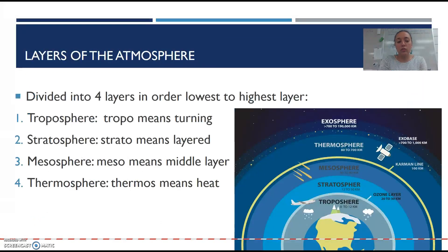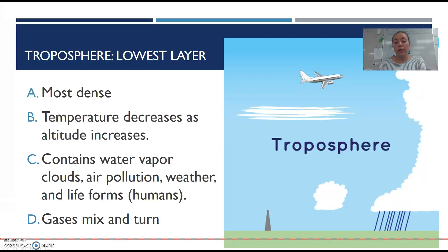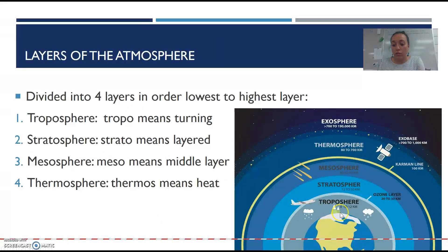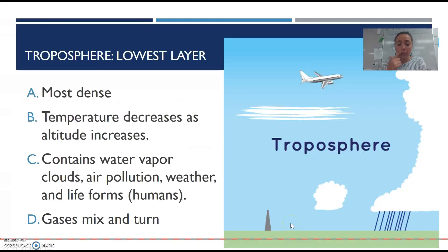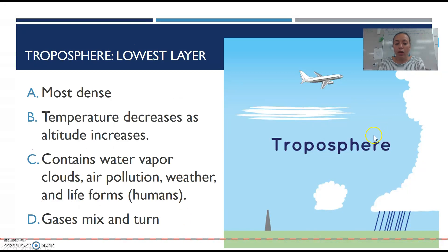Let's start with the first one: the troposphere. That's where we are — we're in the troposphere. You can see it goes basically all the way up to the clouds. It's the most dense because the troposphere has the lowest altitude. The temperature decreases as altitude increases — so in an airplane it'd be colder than down low, and on a mountain you'd be colder than down here. In the troposphere you have water vapor, clouds, pollution, weather, and us — life forms. All the gases mix and turn together.